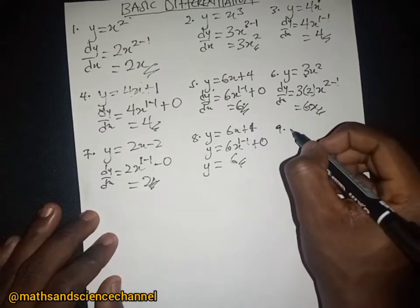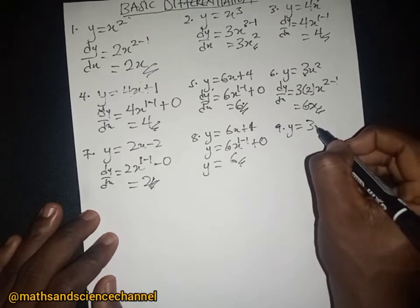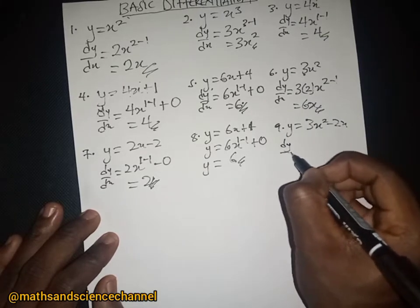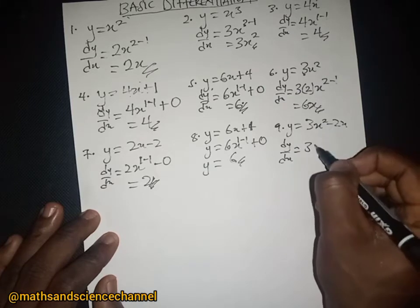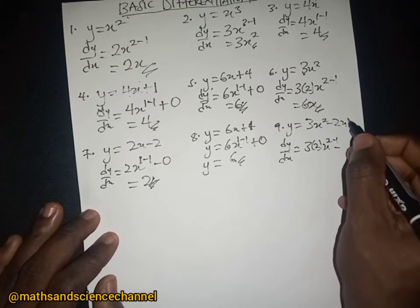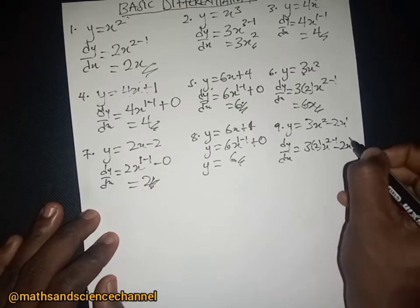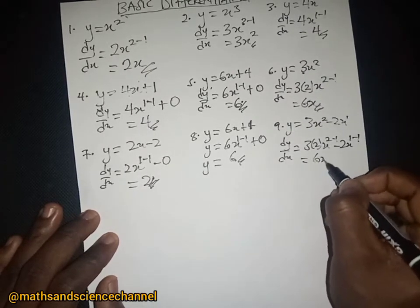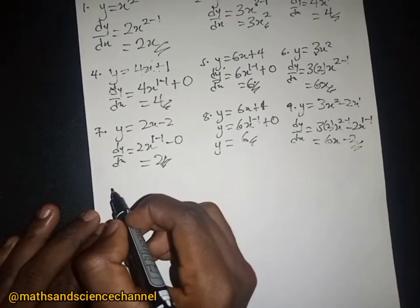Let's take y equal to 3x squared minus 2x. The dy/dx will be equal to — we drop the exponent, it multiplies, we subtract 1 from it, then for 2x we drop the 1 which is 2 times 1, and 1 minus 1 for the exponent — so we are just going to get 6x minus 2.